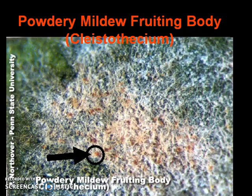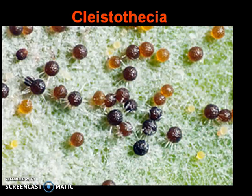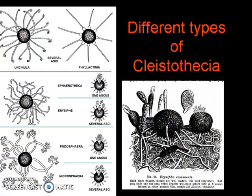The cleistothecium is a sturdy structure which can remain viable during unfavorable seasons. This is a closer view of the cleistothecium, a ball-like structure. By the different ornamentations seen on the surface of the cleistothecium, you can actually identify which fungus it is — which genus and species — based on these ornamentations.